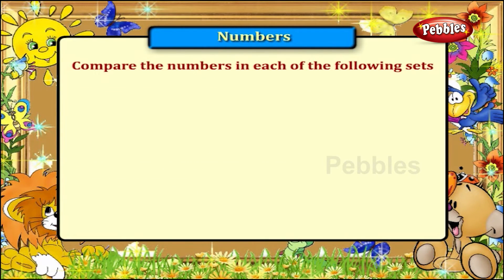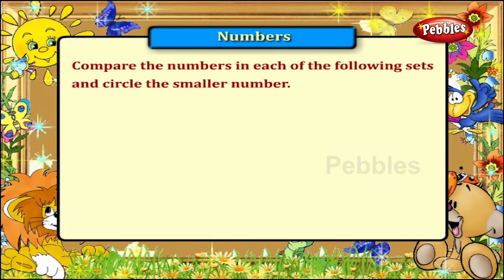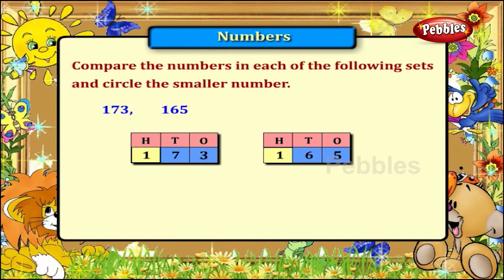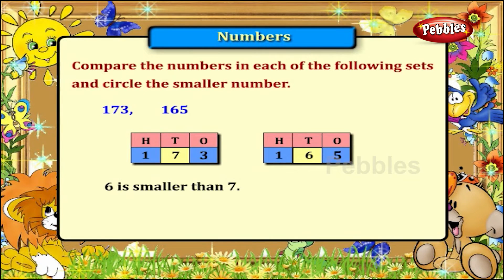Compare the numbers in each of the following sets and circle the smaller number. 173 and 165. The numbers in the hundreds place are the same, so now compare the tens place. 6 is smaller than 7, so 165 is the smaller number.